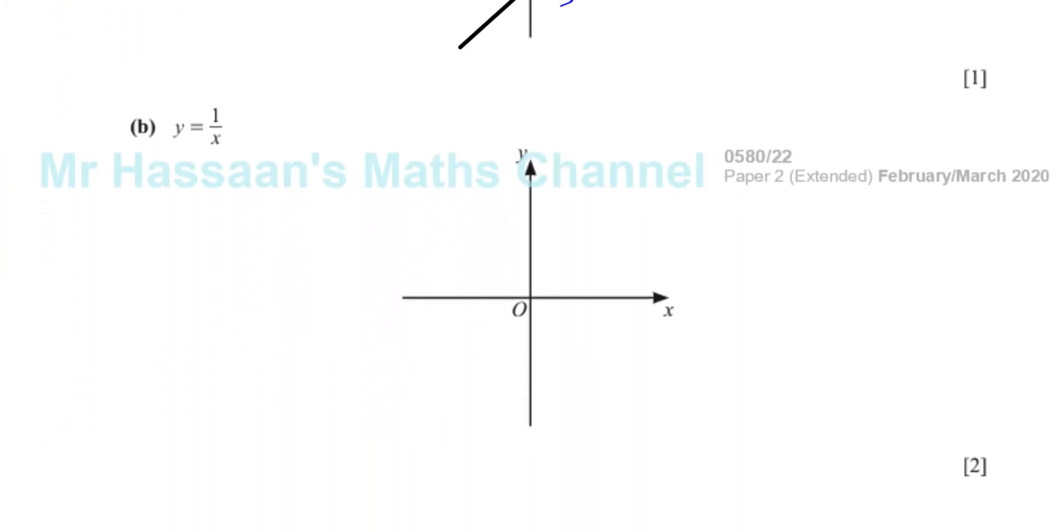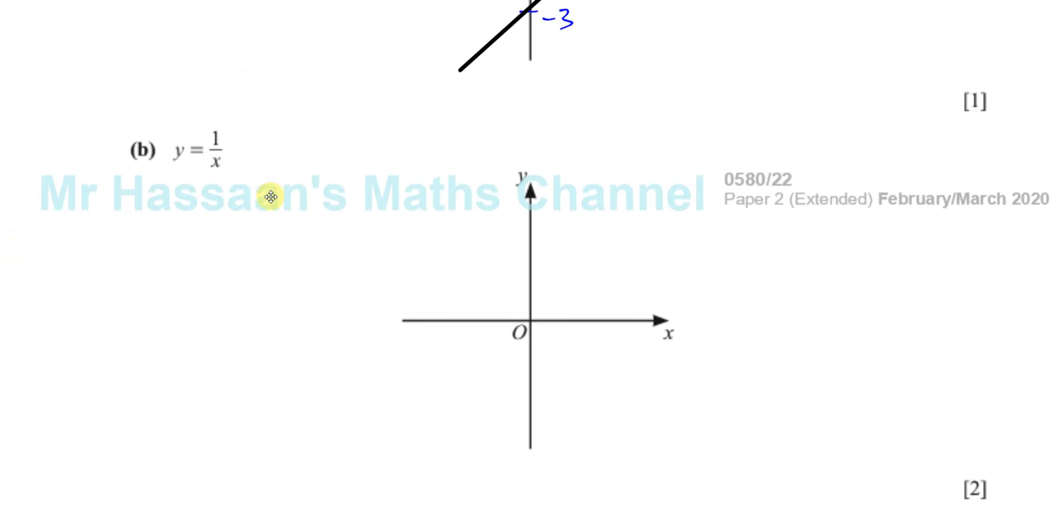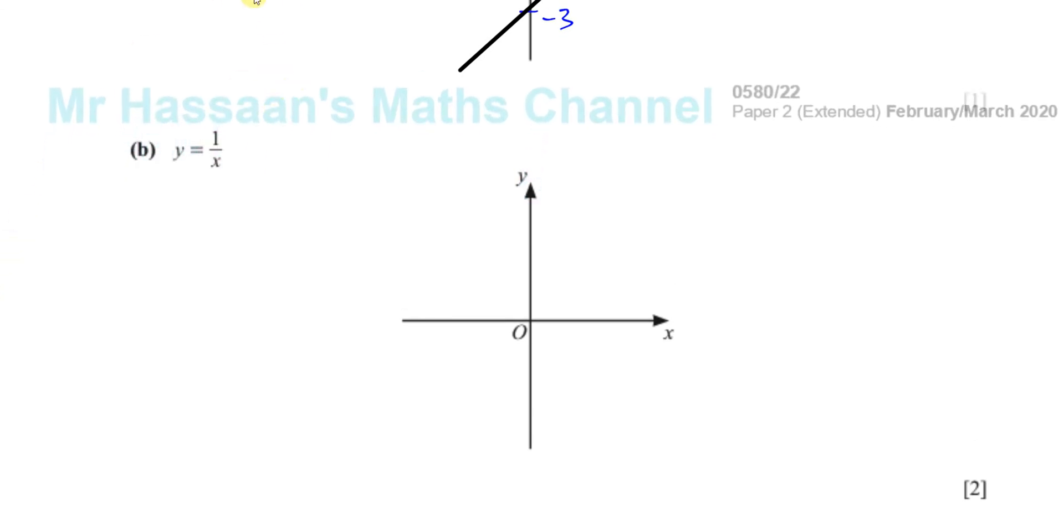Then it says y equals 1 over x. Now, y equals 1 over x is a different type of function. It's called a reciprocal function. A reciprocal function has x in the denominator. And when you have x in the denominator, there's something strange that happens. When x is 0, y is undefined. So x cannot be 0.